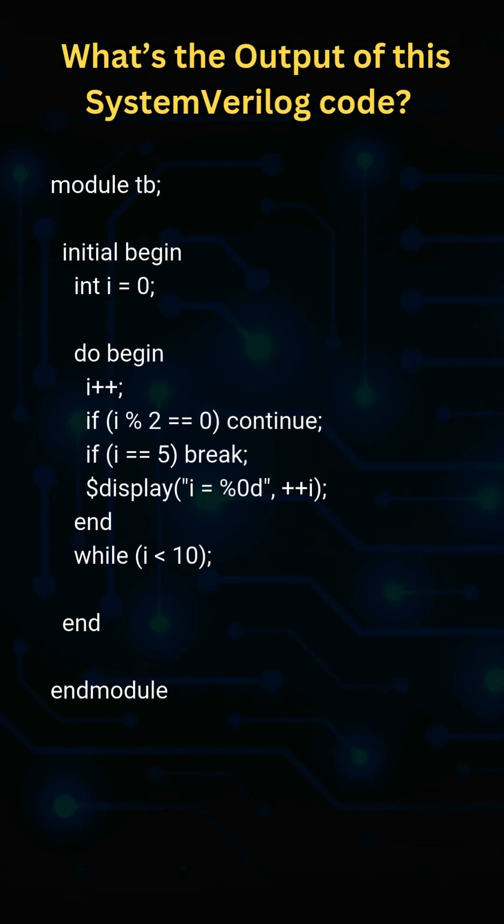What's the output of this SystemVerilog code? Let's break the loop and analyze. Now it is a do-while loop where i should be less than 10. i++ after do begin increments i at the start of the loop. If i is even, the continue keyword skips the rest of the iteration; only odd values proceed.